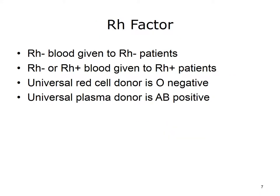In addition to the A and B antigens, there is a third antigen called the RH factor, which can be either present (positive) or absent (negative). In general, RH negative blood is given to RH negative patients, and RH positive blood or RH negative blood may be given to RH positive patients. The universal red cell donor has type O negative blood type. The universal plasma donor has type AB positive blood type.